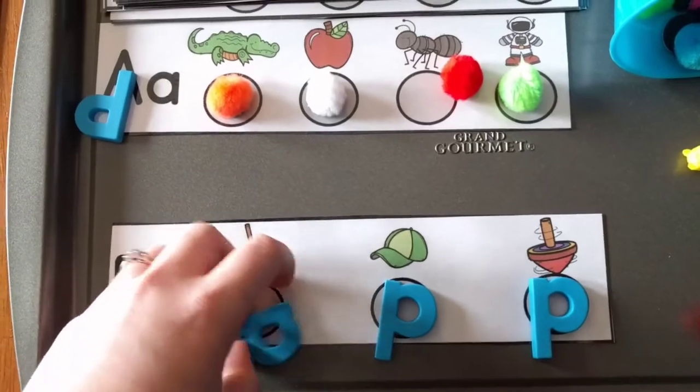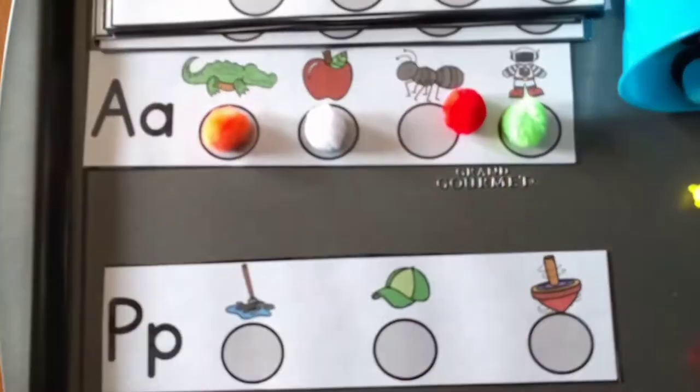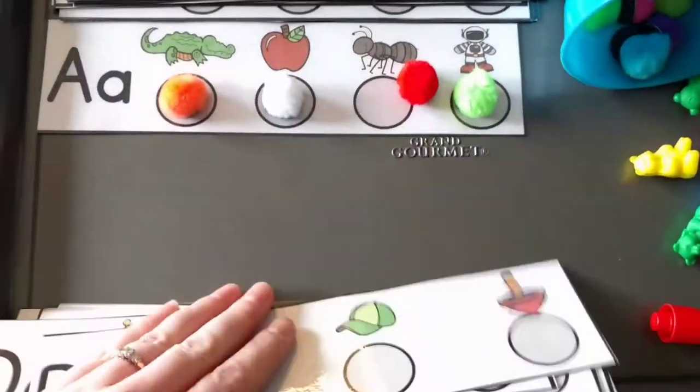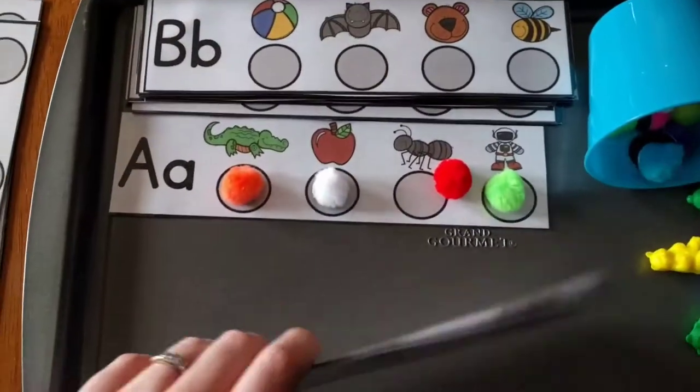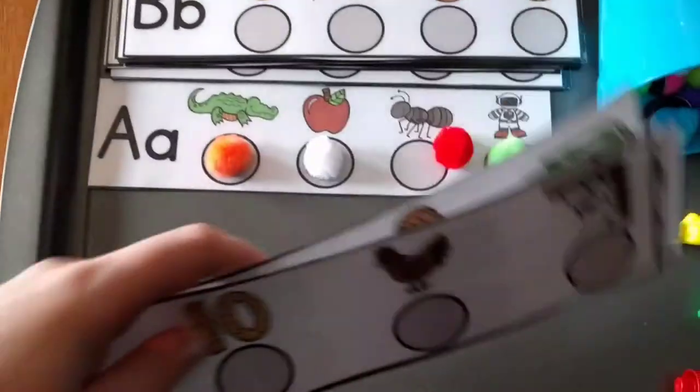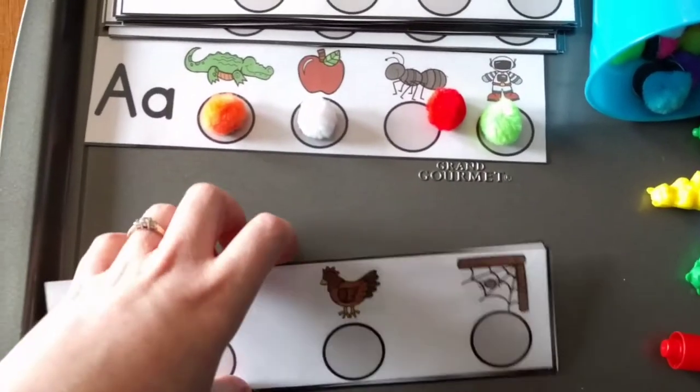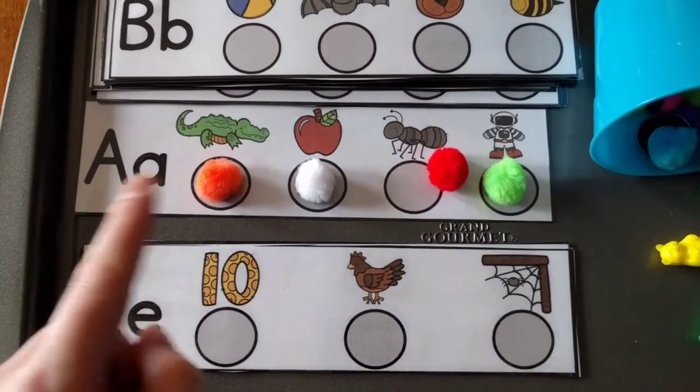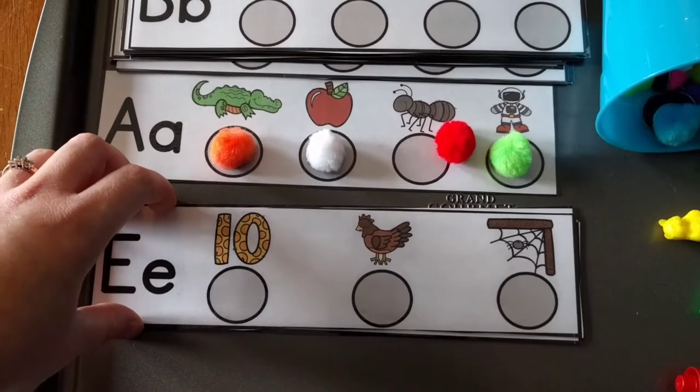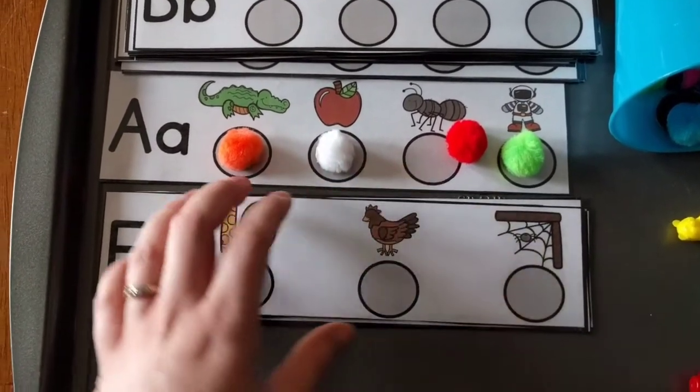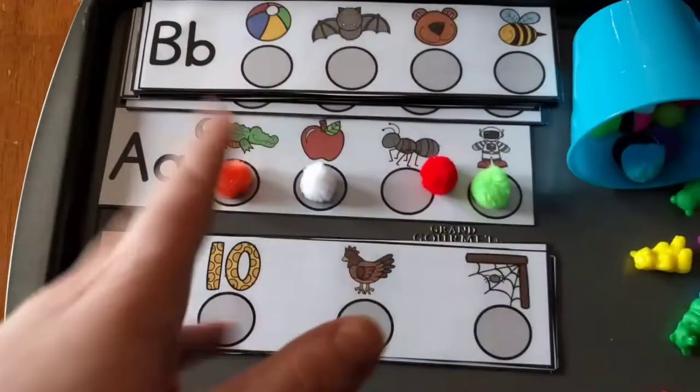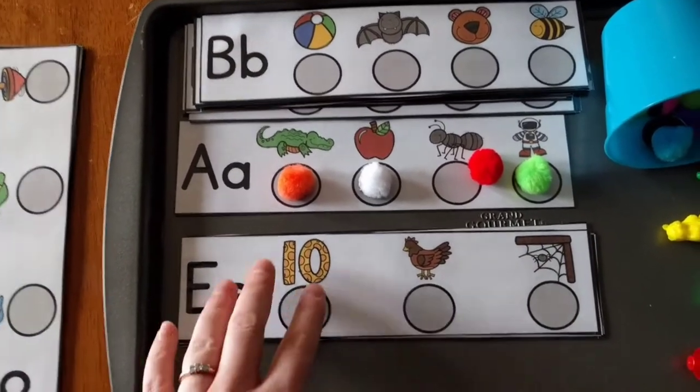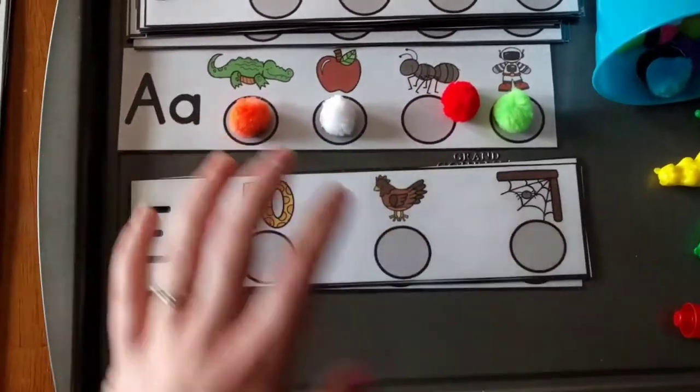Now let me show you the middle vowel sound strips that I have here. Those are ending sounds. Again, I have a whole stack of them. They all come in the same download. So I'll put a link below where you can get all of these. These are also going to be used in my kindergarten curriculum. I'll leave links below to everything.